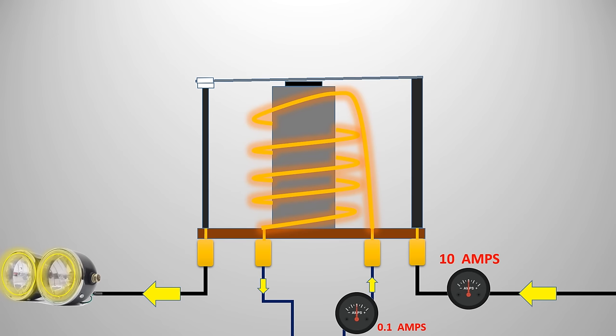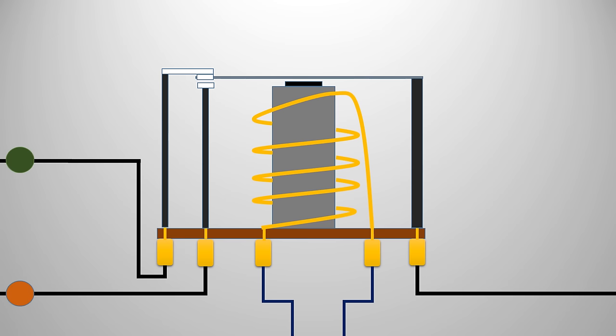A more advanced type of relay is a double-throw, also known as a changeover relay. This relay has two outputs, one of which is normally open and the other is normally closed.